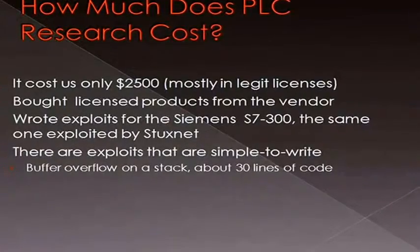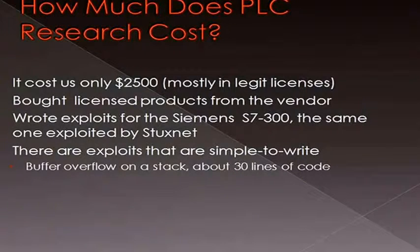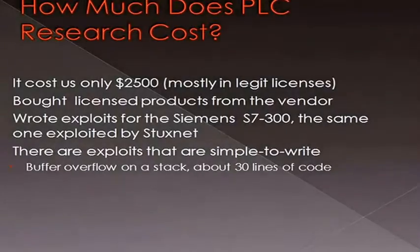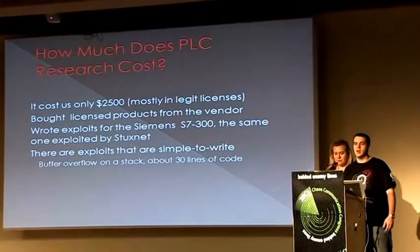Here's the part a lot of you are waiting to hear — how much did this cost us and how long did it take? $2,500, mostly in legit licenses for the software. We actually went and bought the Simatic software, but it was also available on Pirate Bay — we just didn't go that route because I'm also an intellectual property attorney. We researched widely used PLCs, which is why we decided to go with Siemens — not picking on Siemens, just that they are widely used. We went to eBay, looked it up, and bought a kit for 500 US dollars. We could have got it cheaper if we wanted to spend an extra day ordering each piece individually.